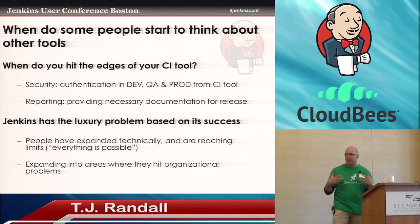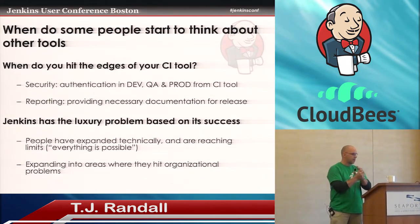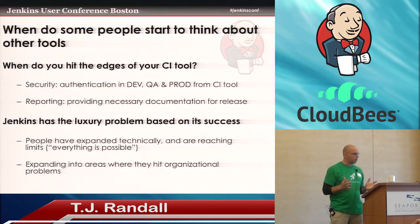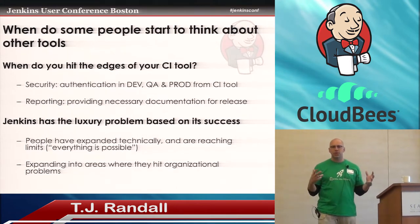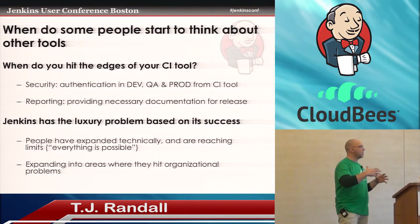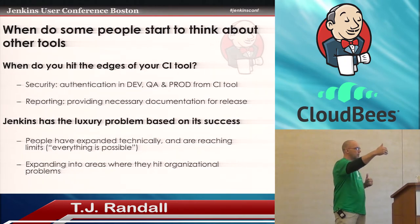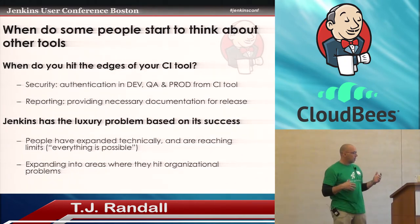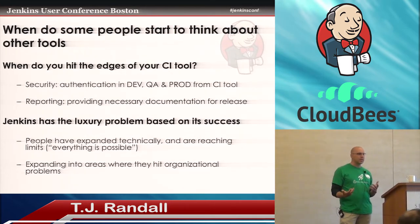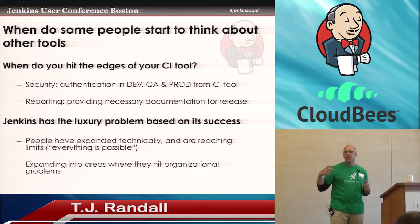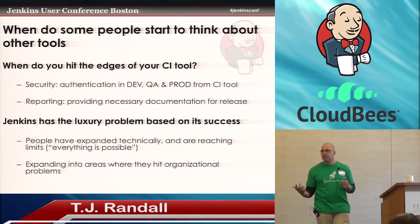So when do people start to think, I have all this functionality, now it's time to think about other tools? It's when you start to hit the edges of your CI tool—concepts like security. Maybe you're having problems where you need to authenticate across your pipeline for production. That's always a huge component to the release process. Different teams need to consume different pieces of information about what's going on in your application delivery.